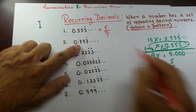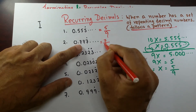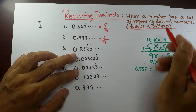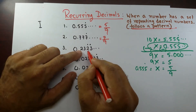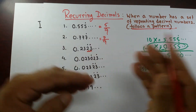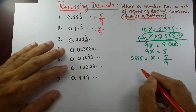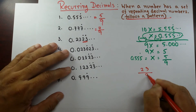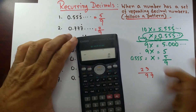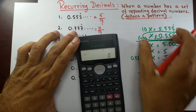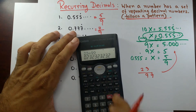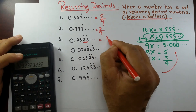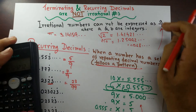Following the same rule, 0.7777... = 7 over 9. Now look at a number repeating 2 digits — 0.232323... In this case, we write 23 over 99. Let's verify: 23 divided by 99 gives 0.23232323... repeating. So 0.232323... = 23/99, again in the form a over b. What about 3 digits repeating — 0.023023023...? That would be 023 over 999, or 23/999. Checking with a calculator: 23 divided by 999 gives 0.023023023... repeating. So these are rational numbers.